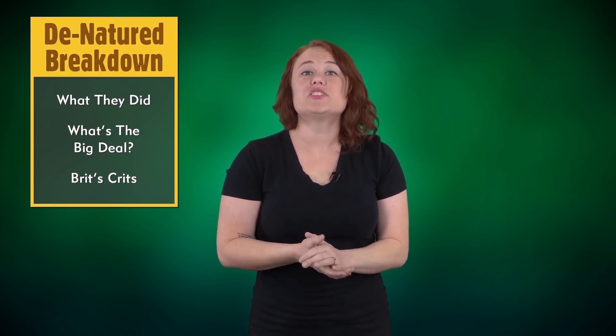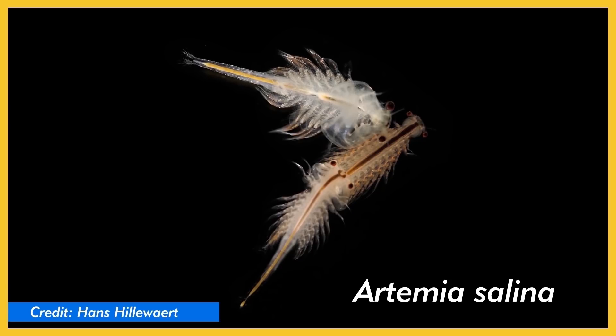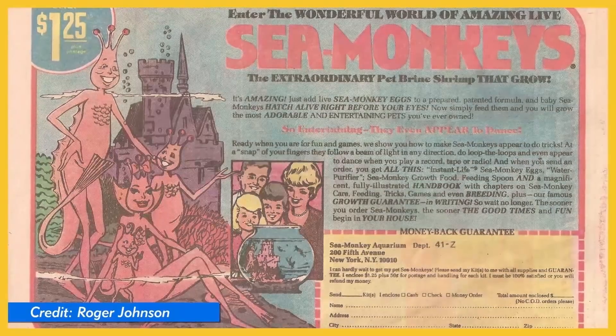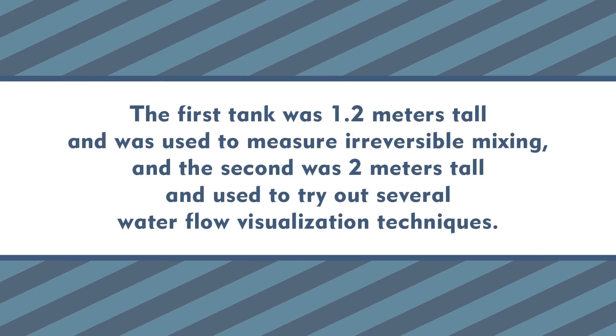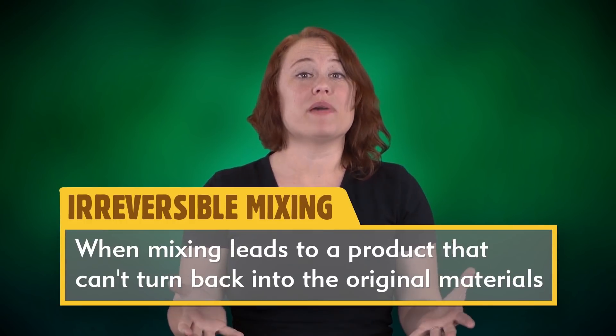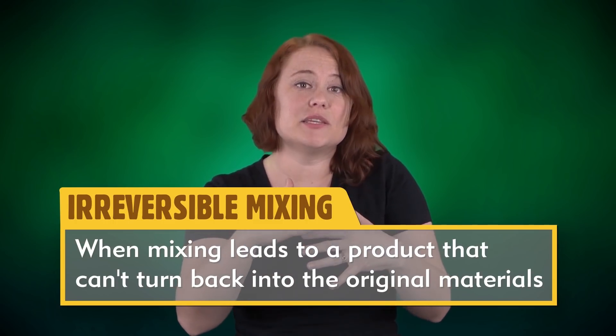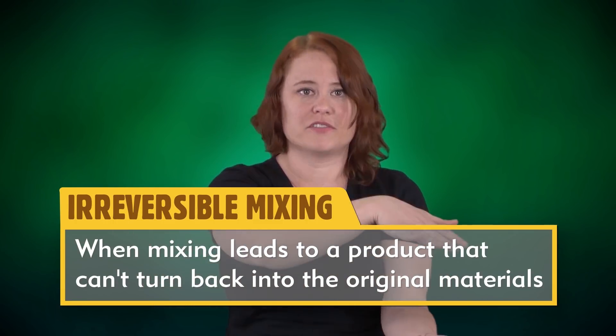To address this phenomenon, the research team set up experiments in the lab using the centimeter-scale swimmer Artemia salina. Artemia salina is a type of brine shrimp, and if you ever had sea monkeys as a child, you've seen hybrid relatives of Artemia salina with your own two eyes. Sorry to spoil the sea monkey magic, but sea shrimp might have been a bit closer to the truth of your childhood aquarium. The scientists set up two separate tank facilities for two separate goals. The first tank was 1.2 meters tall and was used to measure irreversible mixing, and the second was 2 meters tall and used to try out several water flow visualization techniques.